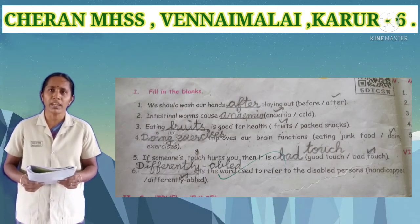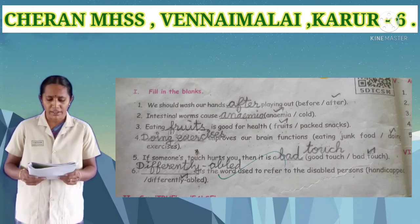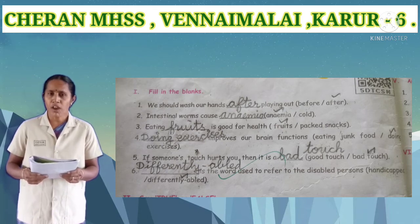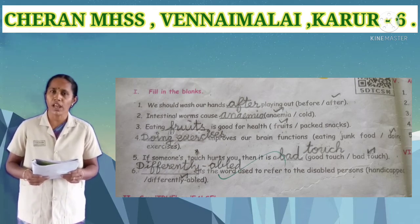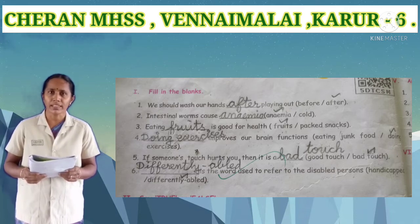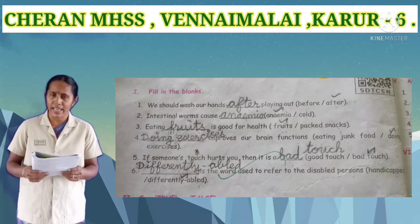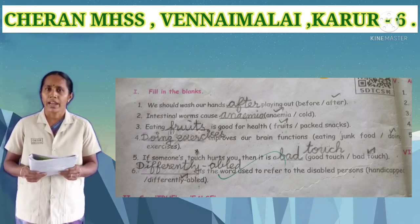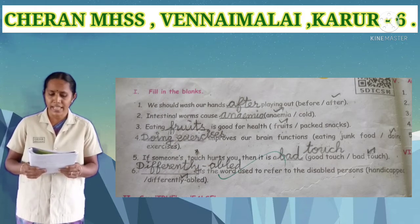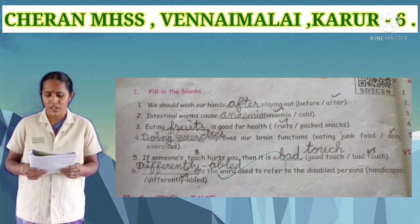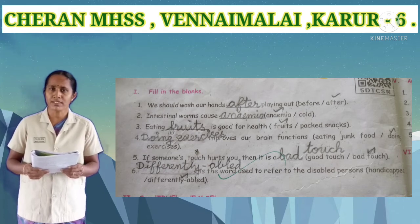Second Roman numeral: fill in the blanks with suitable answer. First one: we should wash our hands blank — before or after. After is the correct answer. Second one: industrial ones cause blank — anemia or cold. Anemia is the correct answer. Third one: eating blank is good for health — fruits or packed snacks. Fruits is the correct answer.